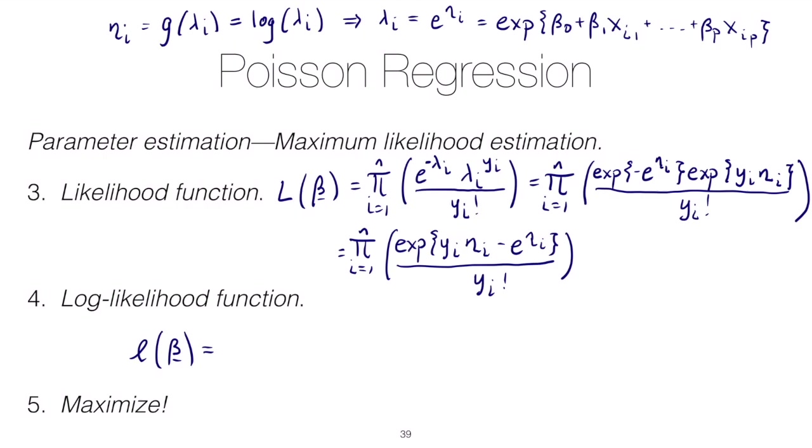And here we take the log of the whole thing. We'll have the log of a product—that should be equal to the sum of the logs. So we'll have a sum, and then we're gonna take the log of a quotient. So that would be the log of the numerator minus the log of the denominator, and the log of the numerator is just the log of an exponential.